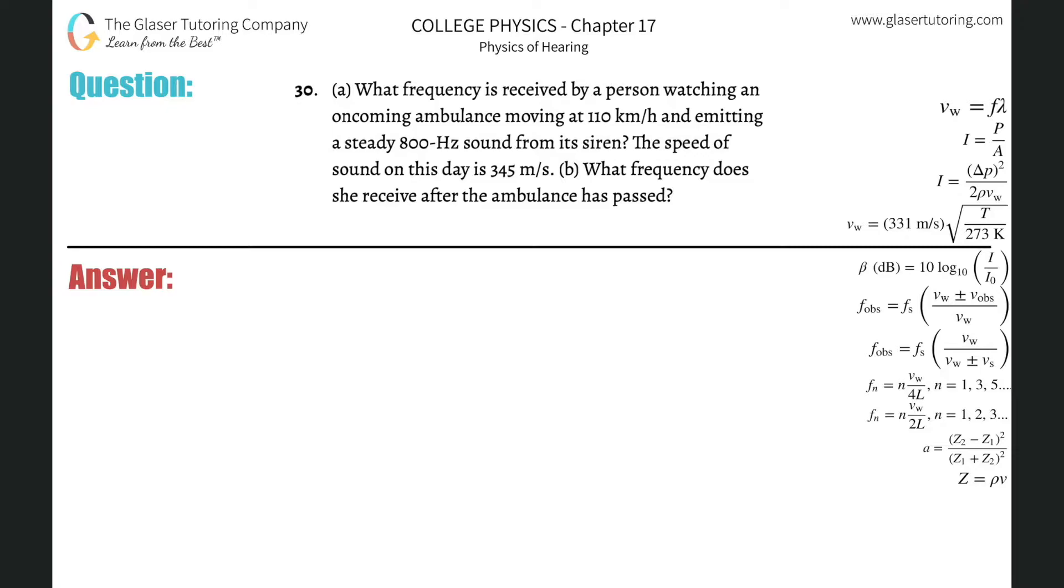Number 30, letter A. What frequency is received by a person watching an oncoming ambulance moving at 110 kilometers per hour and emitting a steady 800 hertz sound from its siren? The speed of sound on this day is 345 meters per second.